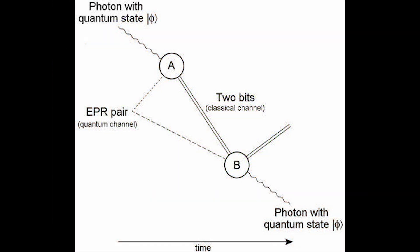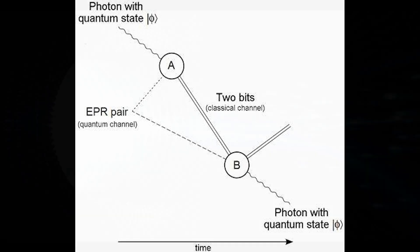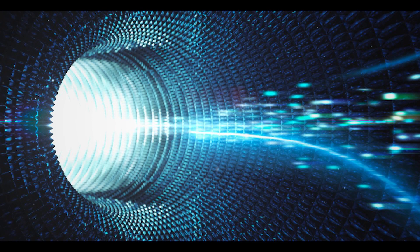In effect, the quantum state of particle C has been teleported to particle B. Importantly, quantum teleportation doesn't allow faster-than-light communication since classical information must still be transmitted between the parties. However, it demonstrates the extraordinary potential of quantum mechanics for secure communication and quantum computing.